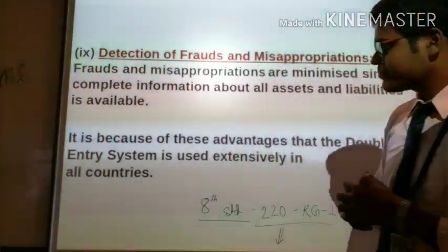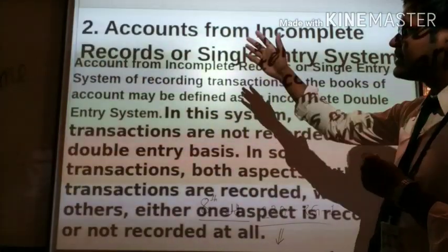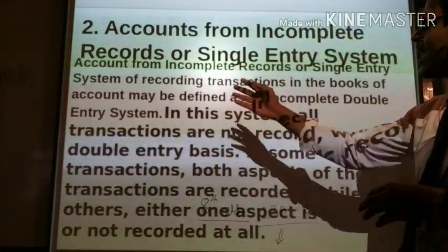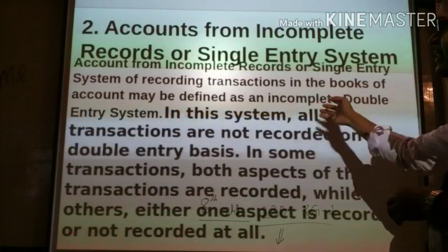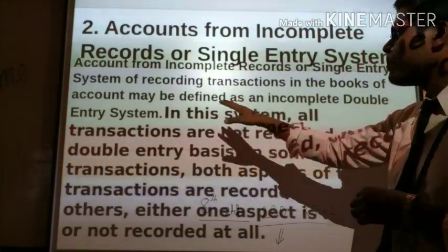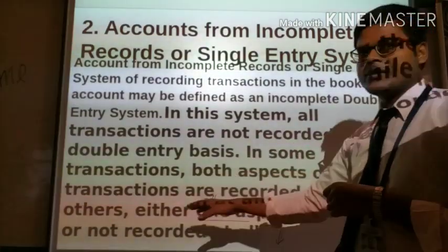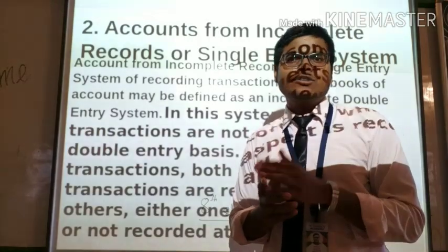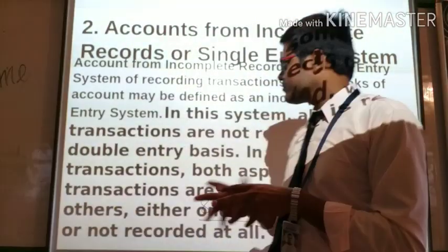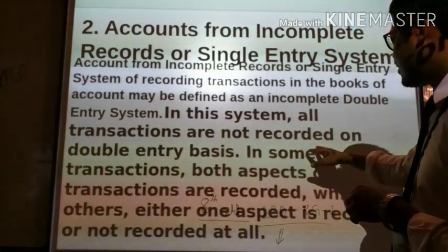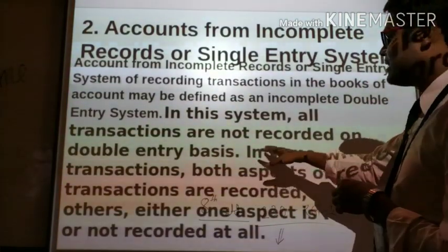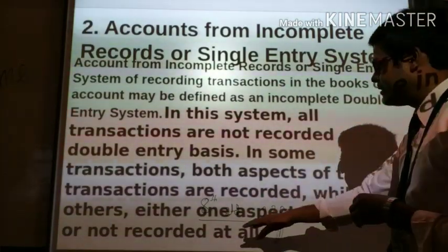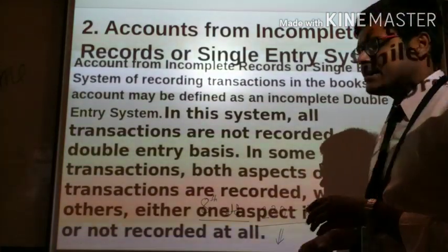Now next, accounts from incomplete records, which we call the single entry system. Accounts from incomplete records, or the single entry system, may be defined as an incomplete double entry system. We call it the single entry system because we do not record both aspects. In this system, all transactions are not recorded on a double entry basis. In some transactions both aspects are recorded, while in others either one aspect is recorded or not recorded at all.